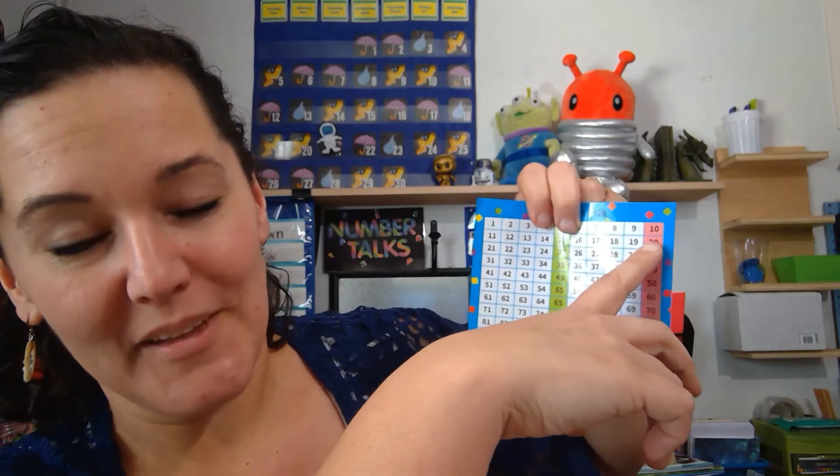Awesome job. Mrs. Doyle used to do that with us at PE sometimes when we do our arm circles forward and then backwards. We'd go by 10s. It's excellent counting practice. Wonderful job. All right, time to move forward. Go ahead and get your pencil and paper ready and we're going to get started on the lesson nine page.